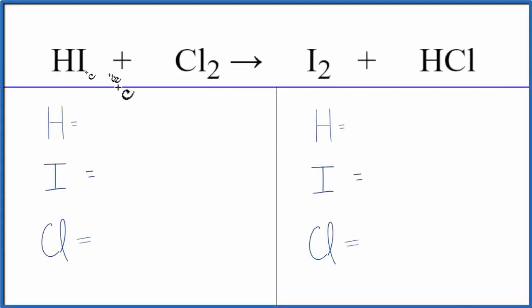To balance this equation, HI plus Cl2, that's hydroiodic acid plus chlorine gas, let's count the atoms up and then balance the equation.